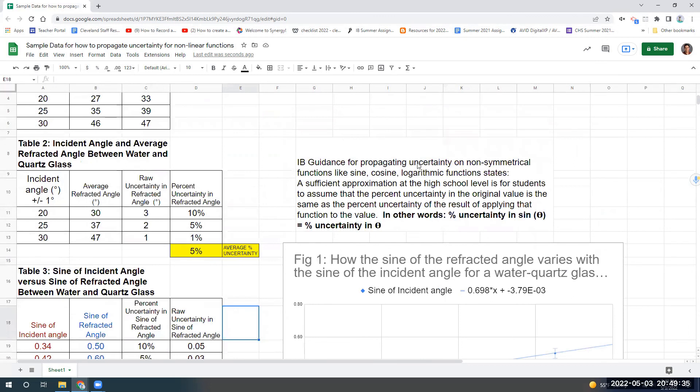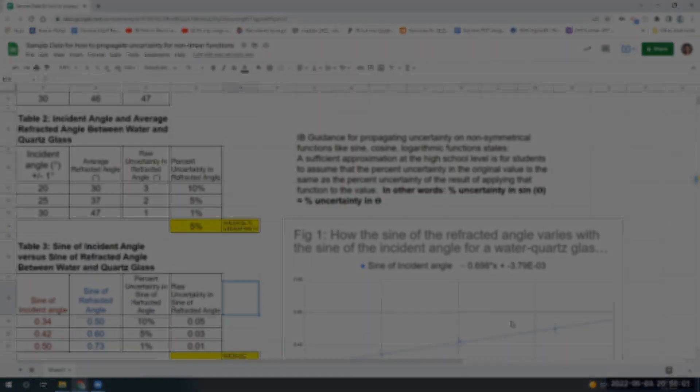So hopefully you've learned from this video how to take an original data set and how to propagate the uncertainty, especially when we're talking about propagating uncertainty for a non-symmetrical function. I forgot to go over this really quickly, but basically this is the IB guidance that says if you have a non-symmetrical function, it's okay to approximate it at the high school level to say that the percent uncertainty of the original value is the same as the percent uncertainty of the result that you get after applying that function. So in other words, for our example, the percent uncertainty in the sine of theta is equal to the percent uncertainty in theta. Okay, that's it. I hope you've enjoyed.